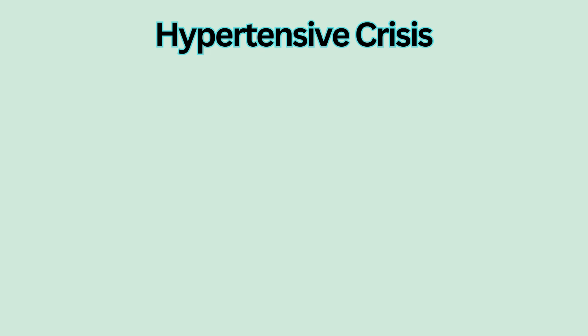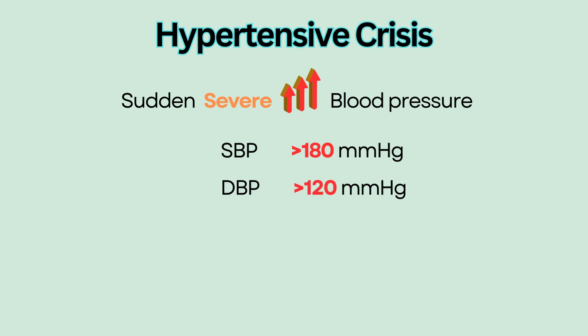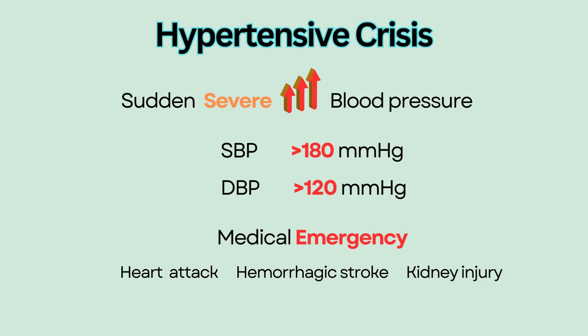Hypertensive crisis is a sudden, severe elevation in blood pressure. It is defined as systolic blood pressure of more than 180 millimeters of mercury and diastolic blood pressure of more than 120 millimeters of mercury. A hypertensive crisis is a medical emergency because it can lead to end organ damage such as heart attack, hemorrhagic stroke, and kidney injury.